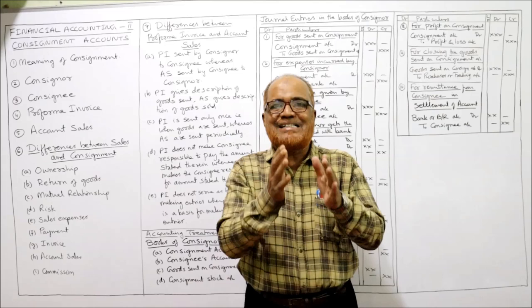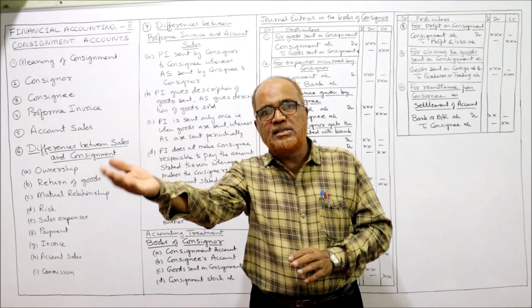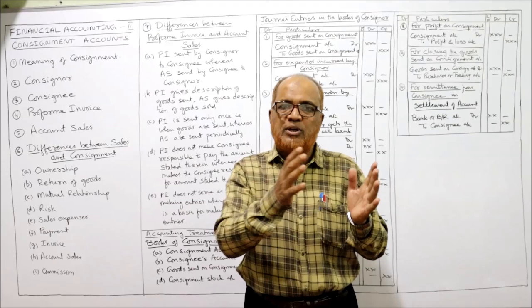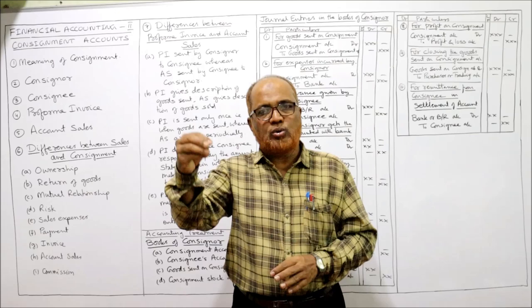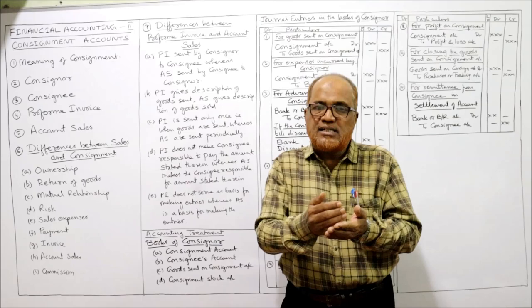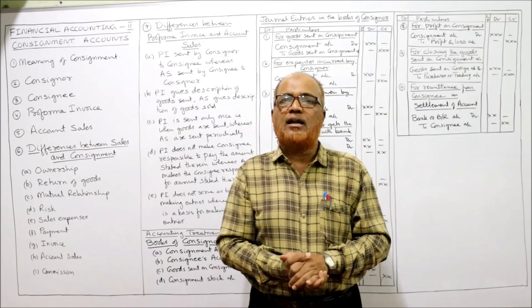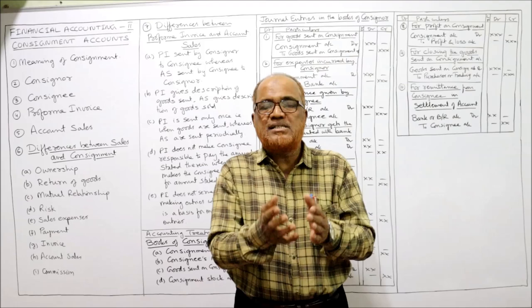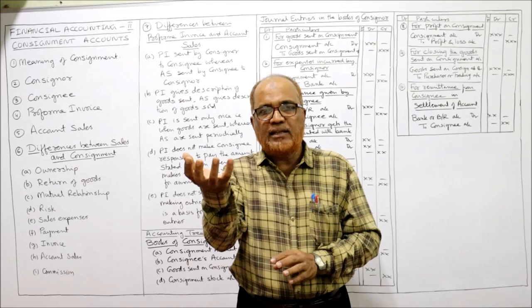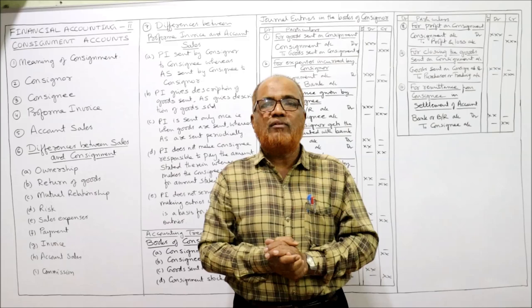The person who sends the goods is called the Consigner, and the person who receives the goods is called the Consignee. The relationship between sender and receiver is that of principal and agent. The Consignee has to sell the goods, receive the amount, deduct his expenses, deduct his commission, and remit the remaining amount to the Consigner. By receiving the goods, the Consignee does not become the owner — it is not a purchase. He is simply getting possession of the goods.